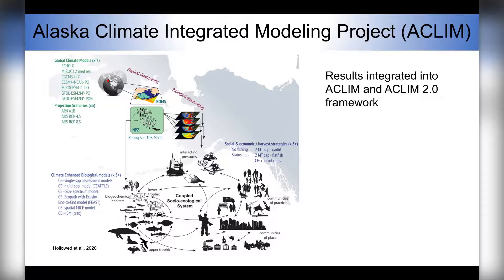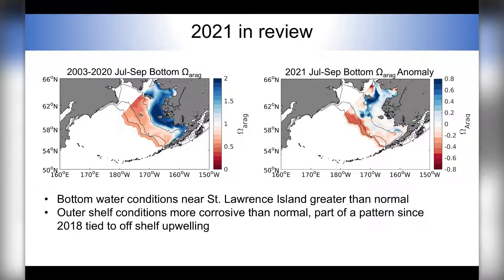What I presented so far has all been related to long-term strategic planning, but what about tactical planning on shorter time frames? We can also use this model to simulate past and present conditions. Here I'm showing bottom water omega for just the Bering Sea management area — on the left is the average July to September conditions over the full model simulation, and on the right is the 2021 anomaly compared to that average. For 2021, the two noteworthy items are that the bottom waters near St. Lawrence Island were greater than normal, while other outer shelf waters were lower and more corrosive than normal. In fact, this outer shelf corrosivity is part of a multi-year pattern that first emerged in 2018, which we think is likely caused by an intrusion of off-shelf water from the Bering Sea basin onto the outer shelf. This water is very old and has a very high carbon concentration, generating this local signal of really low omega values.